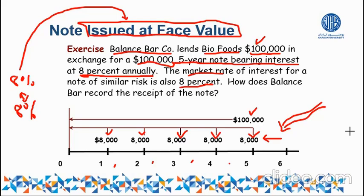Step number two would be a discount amortization table, if needed — it is not required in every numerical. In this particular numerical, we do not need it, but in other note receivable numericals we will definitely need it. Step three covers the journal entries related to note receivables. Those are the three steps of the solution.